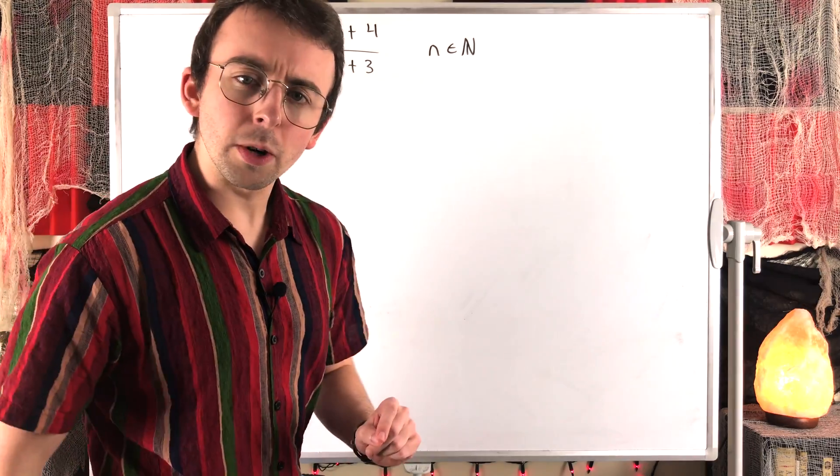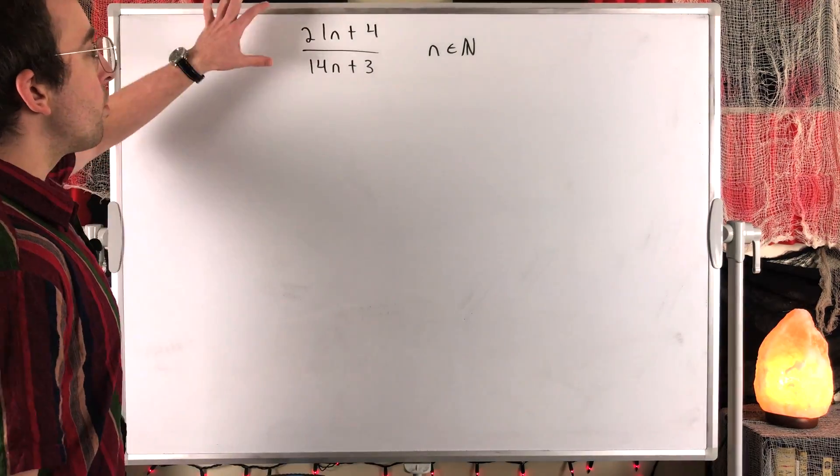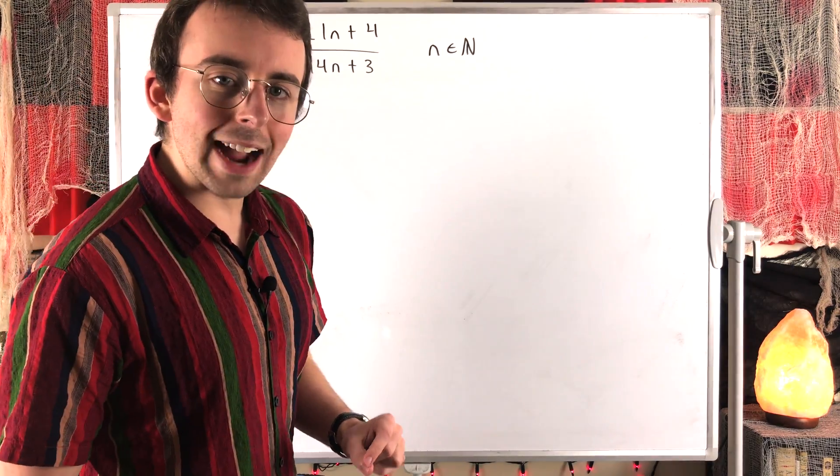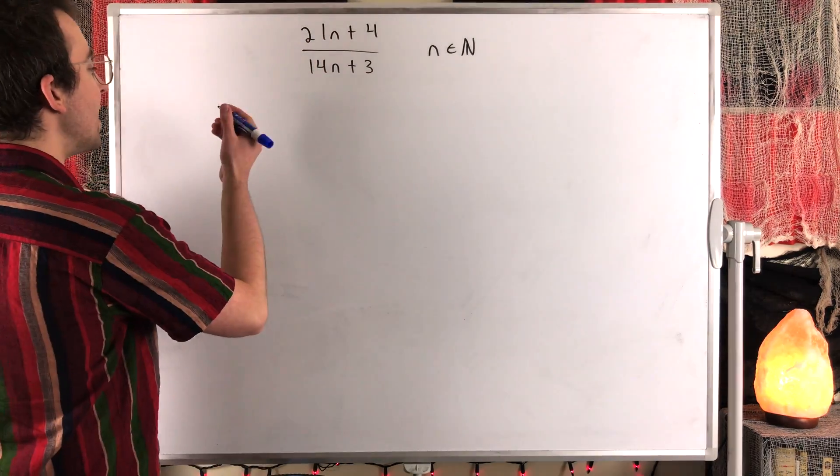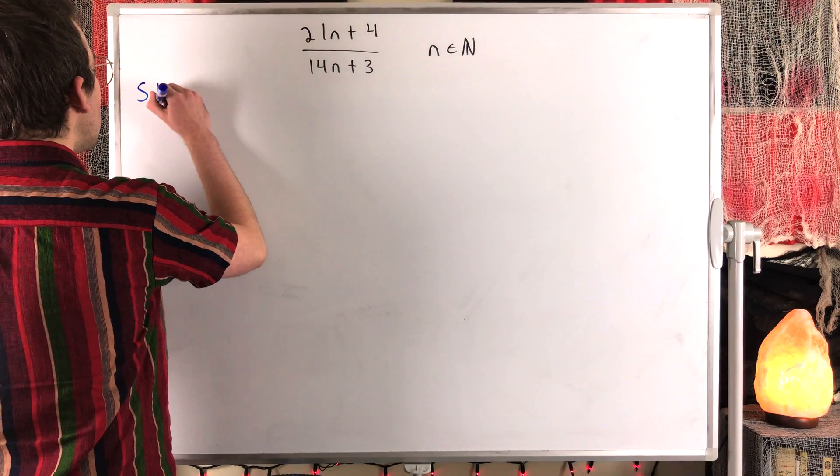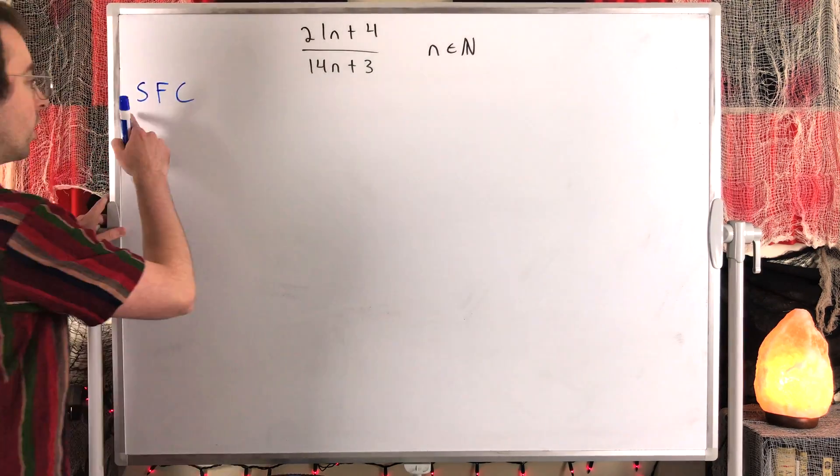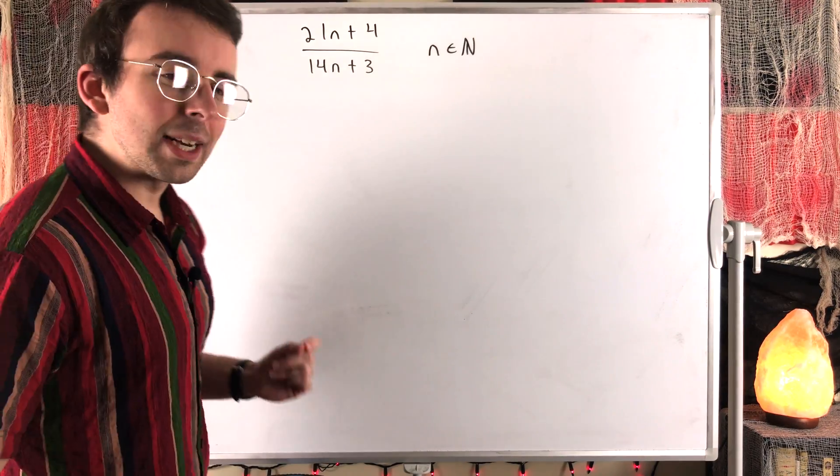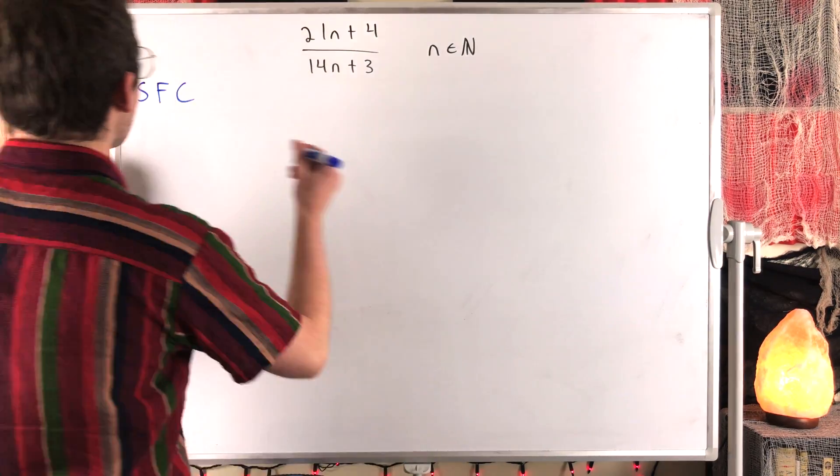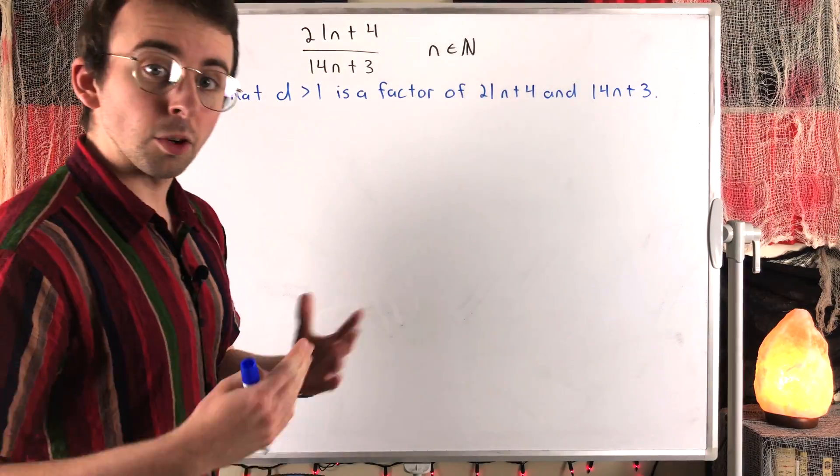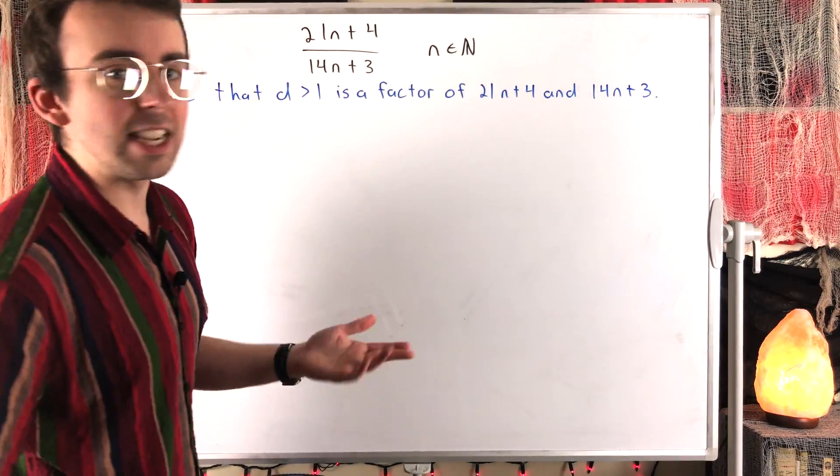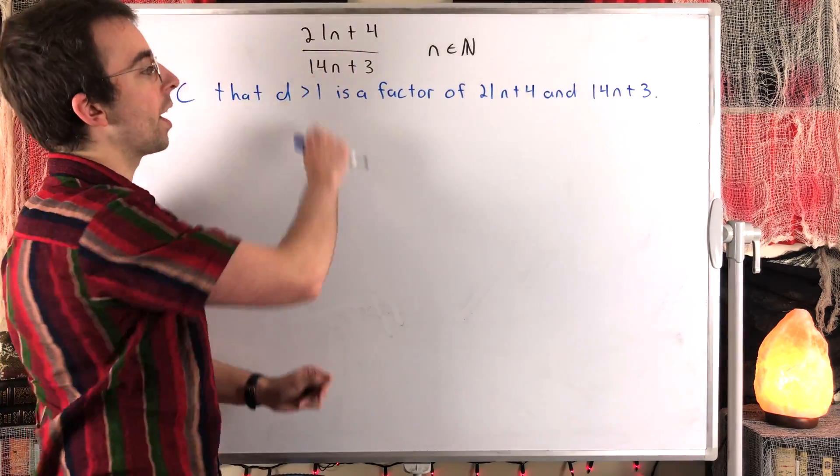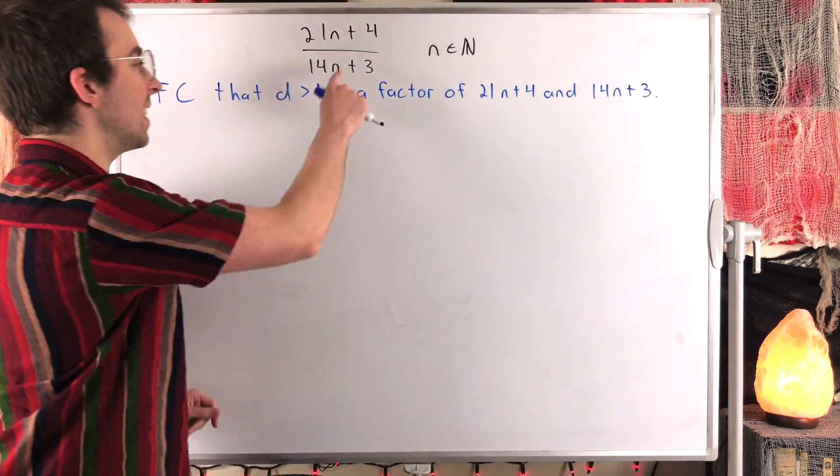So we'll suppose the opposite of what we're trying to prove. We're trying to prove this fraction is irreducible, that the numerator and denominator have no common factor greater than 1. So to begin our contradiction proof, we'll suppose for contradiction, which I abbreviate SFC, that the numerator and denominator do have a common factor greater than 1. So here's what we say: suppose for contradiction that D, some integer greater than 1, is a factor of 21n plus 4 and 14n plus 3.